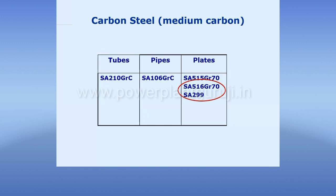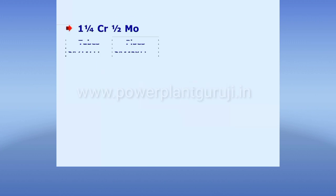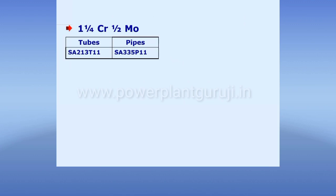The metallurgy we use there is chrome-moly metallurgy called T11 — SA213T11 for tubes and SA335P11 for the header. Note it down: this is having one and one-quarter chrome, that is 1.25% chrome, and half percent molybdenum.